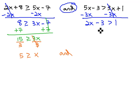It's now a two-step inequality. We can add 3 to both sides, giving us 2x is greater than 4. Finally, dividing both sides by 2 gives us x is greater than 2.